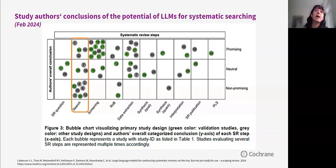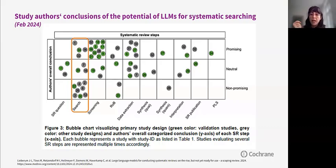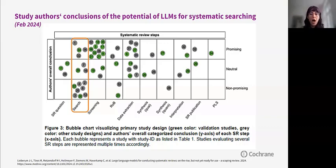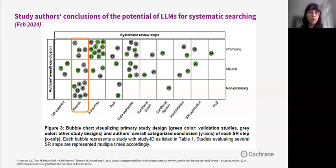In contrast, for screening and data extraction, the majority of study conclusions were positive or at least neutral. However, to get a sense of what AI in general — and LLMs in particular — can or cannot help us with, we need to consider what steps of the search process they are used for and what the goal of the AI support is.